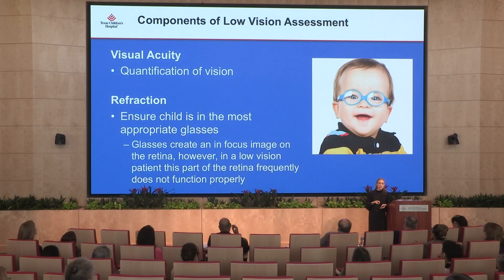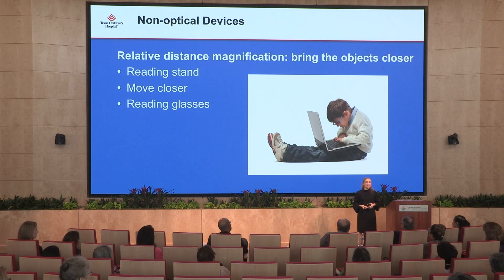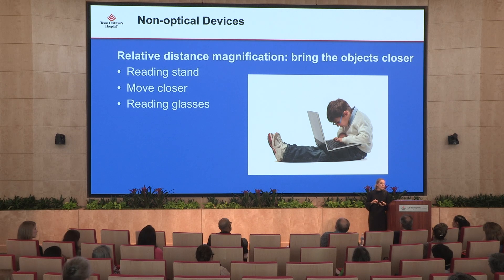We maximize vision by making modifications in the environment or through assisted devices. First I quantify their vision, which is extremely important for therapists and teachers who want to present materials the child can easily read. I double-check their glasses with a refraction. Then we optimize their vision — sometimes through simple modifications like bringing materials closer, using a reading stand or lap desk. It's okay for the child to hold things close because they're just making it bigger. We also prescribe high-powered reading glasses or bifocals to help with magnification.